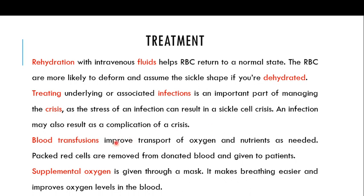Blood transfusion can also improve the transport of oxygen and nutrients. Red cells removed from donated blood are given to patients, since sickle cell anemia patients are deficient only in red blood cells. Additionally, supplemental oxygen is sometimes given through a mask to make breathing easier and improve oxygen levels in the blood.